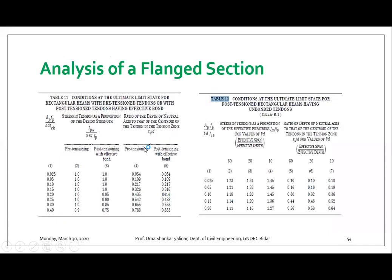This is how it appears in your codebook — this is table number 11. It is for the ultimate limit state for rectangular beams with pre-tensioned tendons or with post-tensioned tendons having effective bond. Whereas table number 12 is for the ultimate state for post-tensioned rectangular beams having unbonded tendons. Table 12 is for unbonded tendons and table 11 is for bonded tendons.